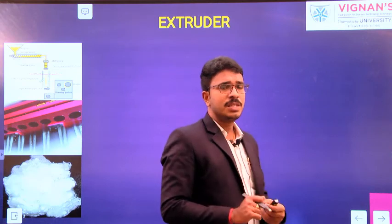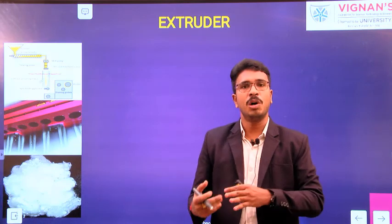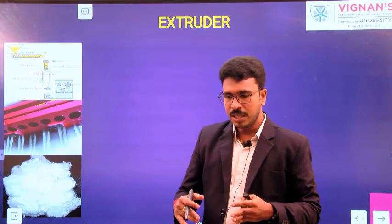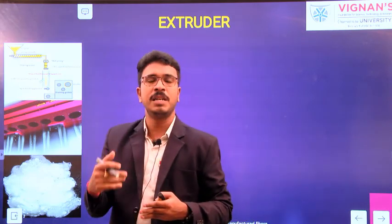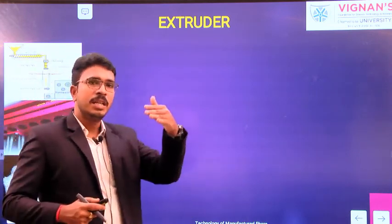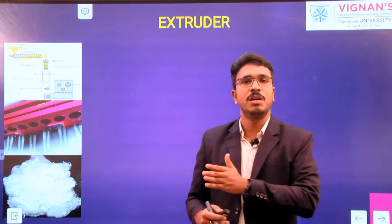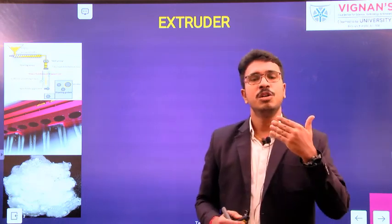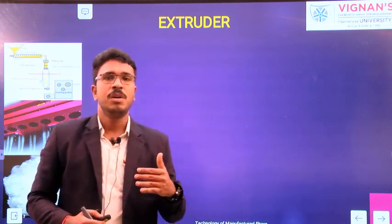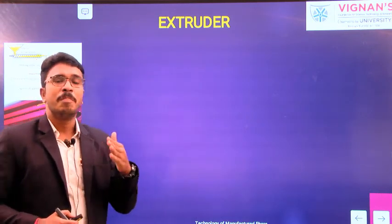Till now we have discussed what is melt spinning, what is the need for melt spinning, and in what way it is more advantageous than any other spinnings. We have seen the detailed elements in a melt spinning line including their functions. Also we have seen the spinning speeds — the range of spinning speeds — right from conventional, direct spin draw process, high speed spinning, and super high speed spinning. Now we are going to discuss in detail about each and every element present in the melt spinning line: extruder, manifold, gear pumps, filter, and spinneret — these three together we call the spin pack assembly — then quenching chamber, spin finish, and drawing.